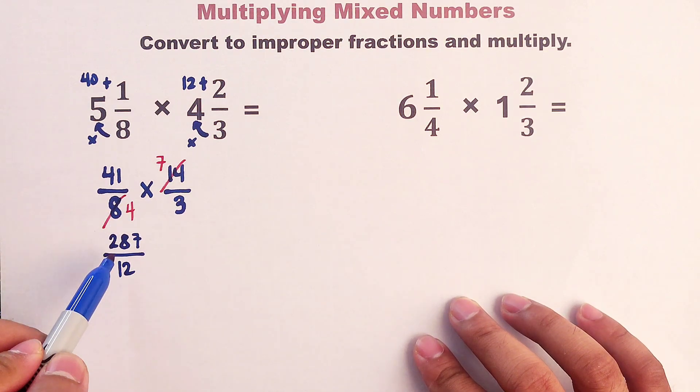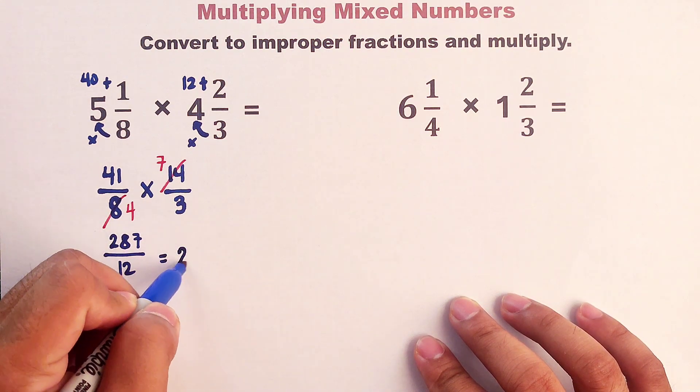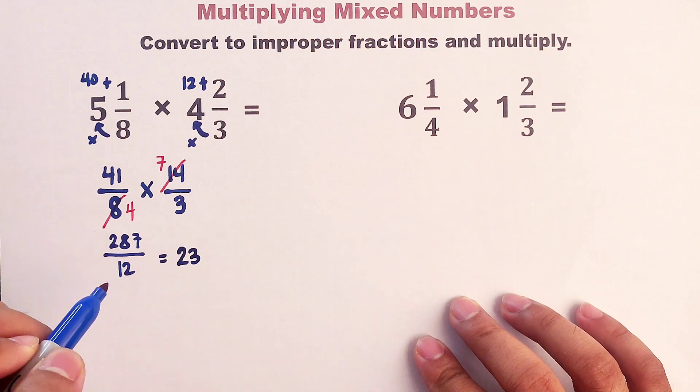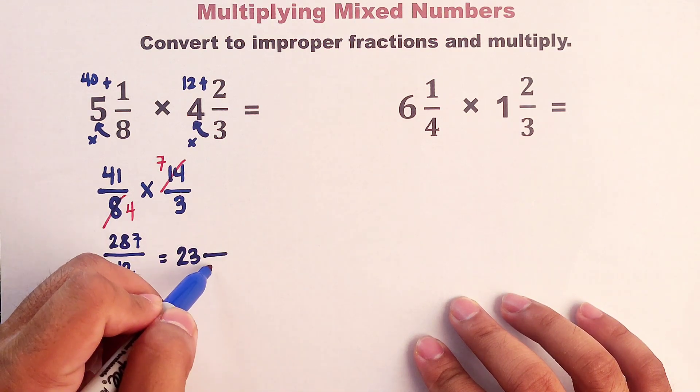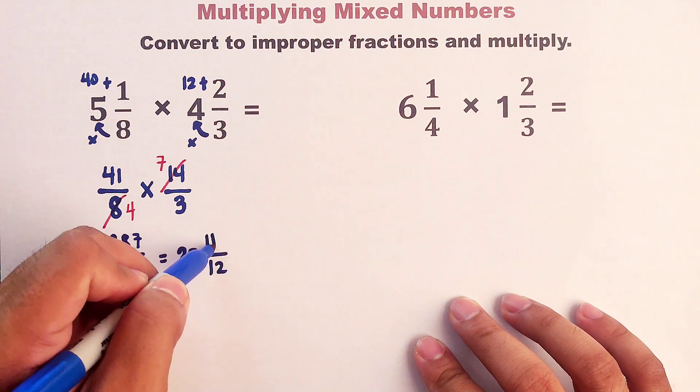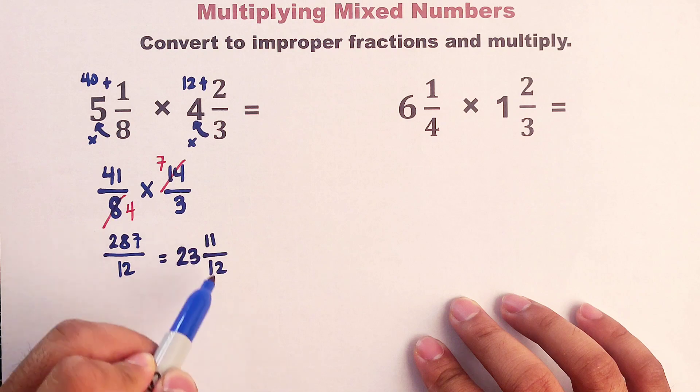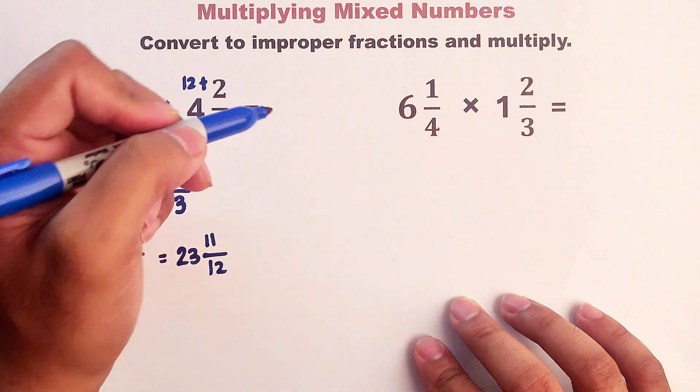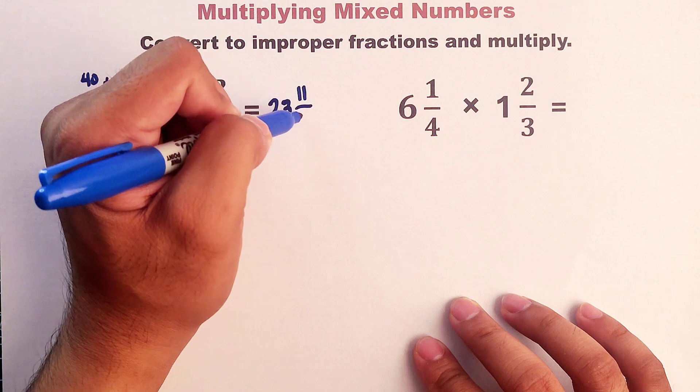So if we divide 287 by 12, that would be 23. There are 23 12s in 287. And then we will copy the denominator. And we have here an 11. You can do the long division to get 23 and 11 over 12. And as you can see, this is the final answer. 23 and 11 over 12.